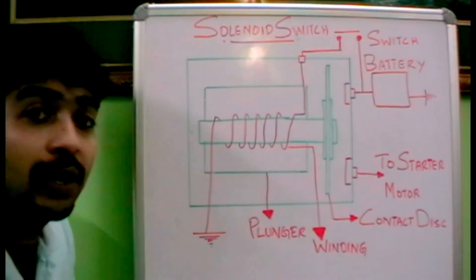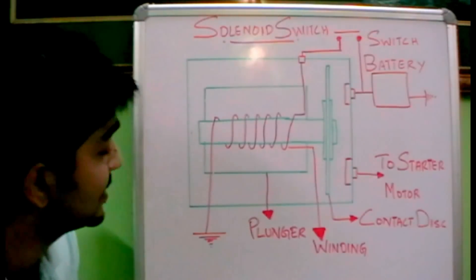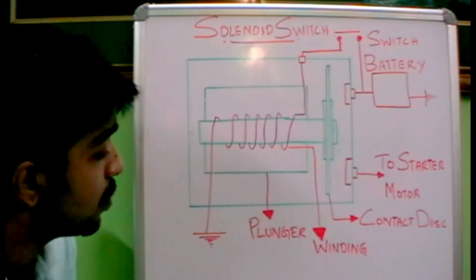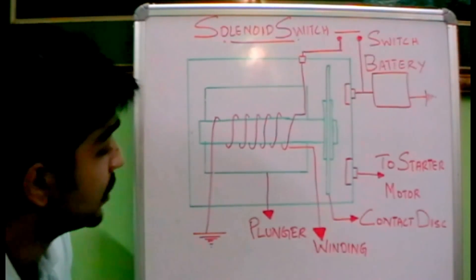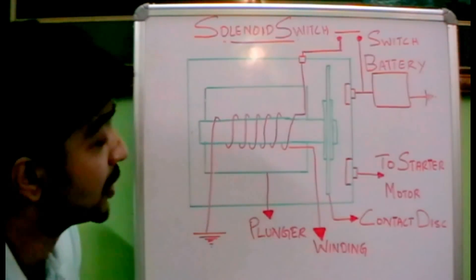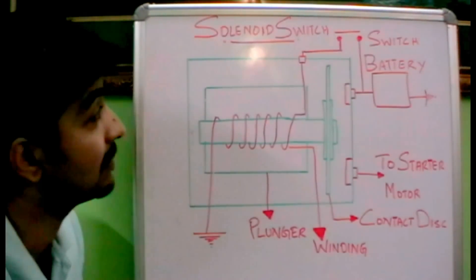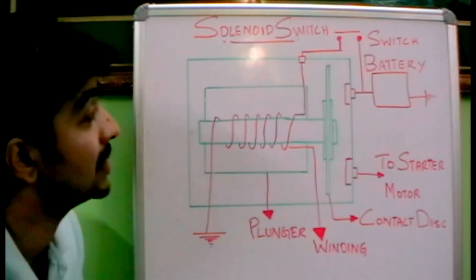The advantage of the solenoid switch over the manual switch is that the heavy current wiring length was reduced. That was one advantage. That means reduced voltage drop in the starter motor circuit, which is a big advantage of the solenoid switch.